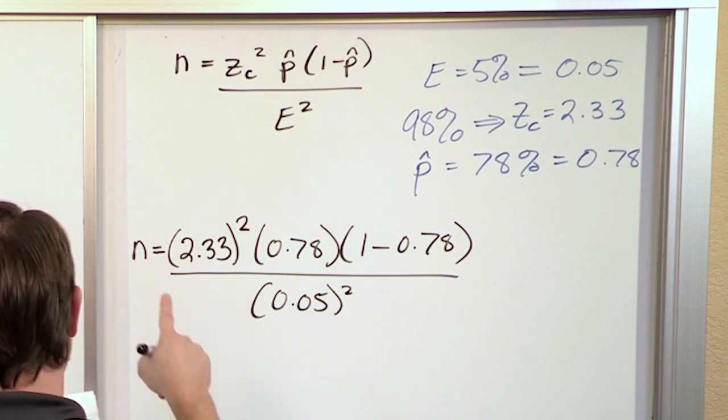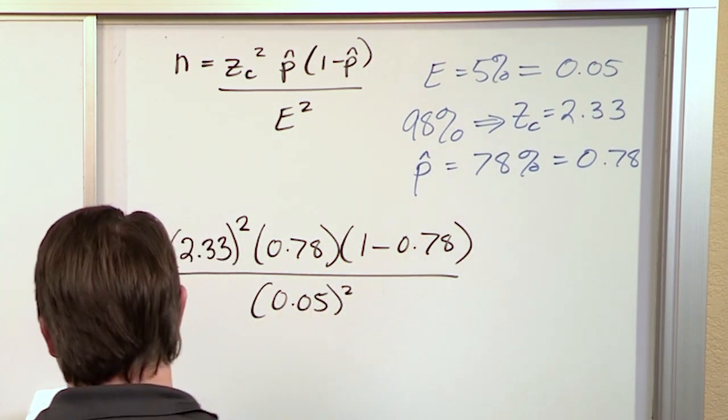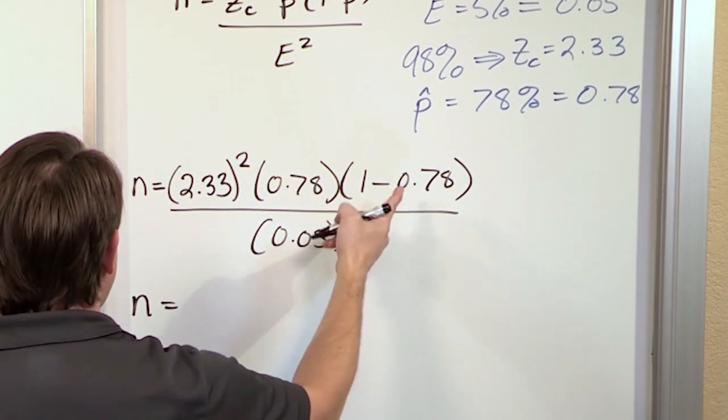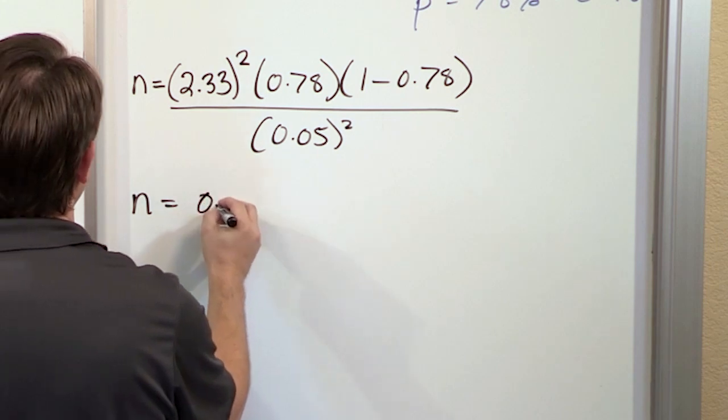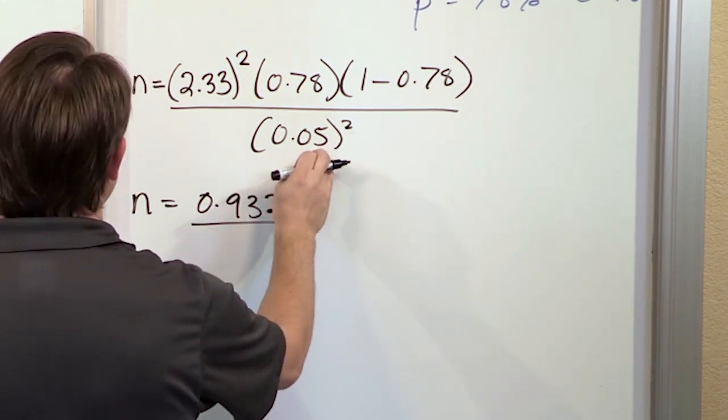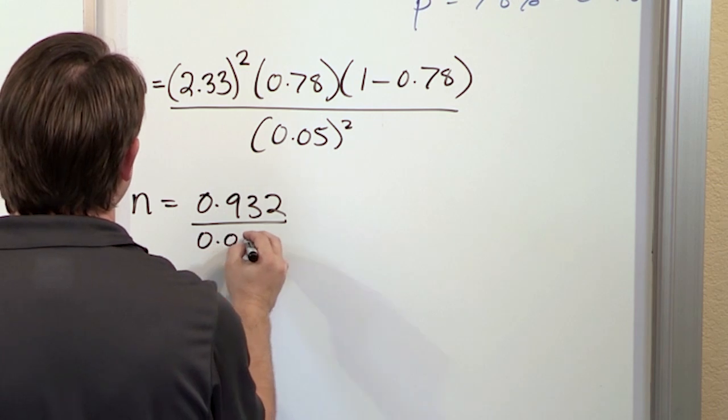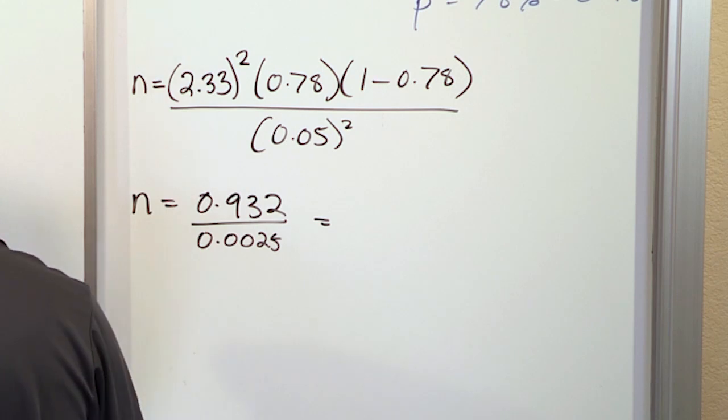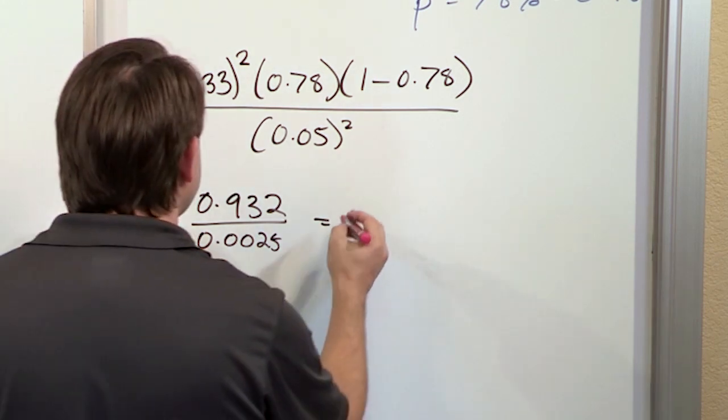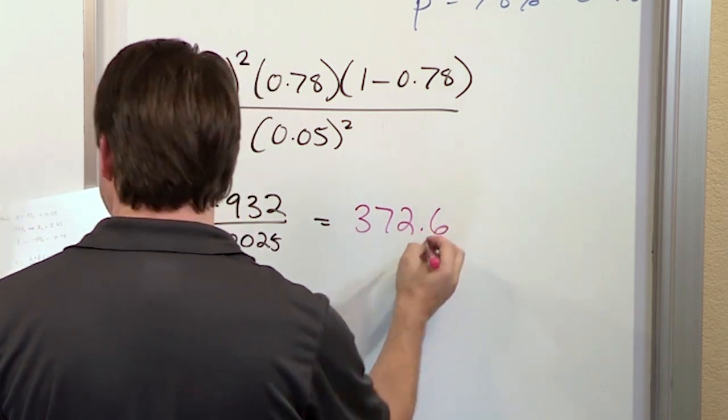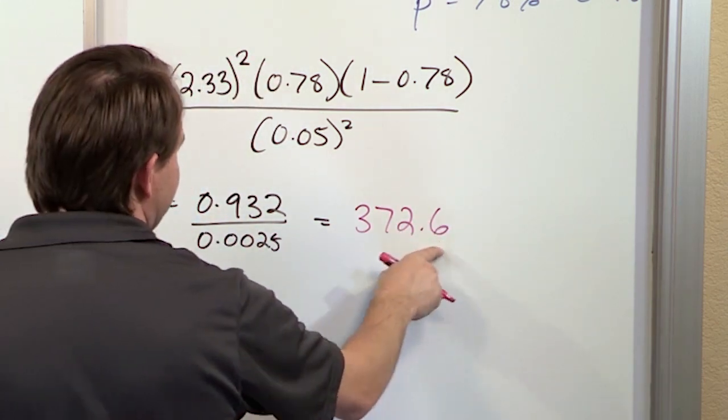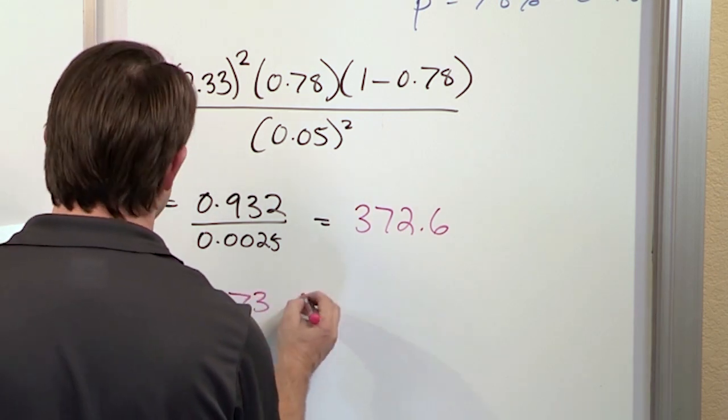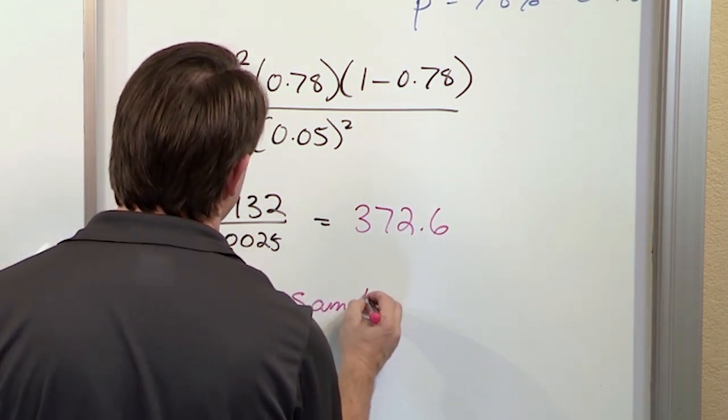So 2.33², 0.78, 1-0.78, and 0.05². When you square this and multiply and do the subtraction and multiply it all through, you get 0.932 on the top. On the bottom, when you square this, you'll get 0.025. When you divide these two, you'll get 372.6. You can round up because you can't have a fraction of a sample, so 373 samples needed.